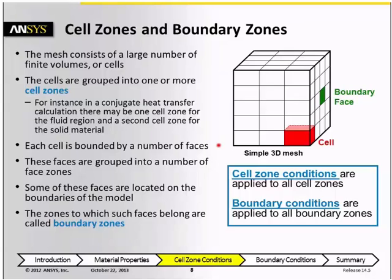Each of the cells in the mesh is bounded by a number of faces, and all of the faces of all of the cells are grouped into one or more face zones. Some of the faces are located on the boundaries of the model, like we see over here in the green face, and the zones that these faces belong to are called boundary zones.